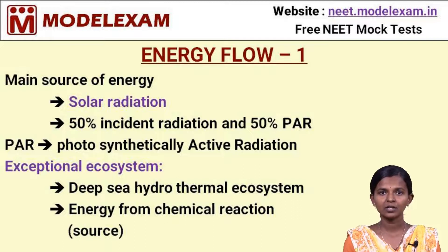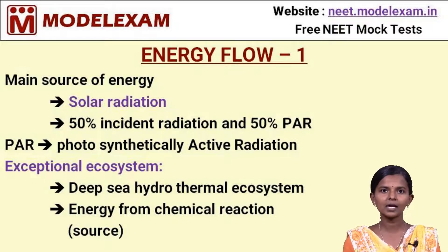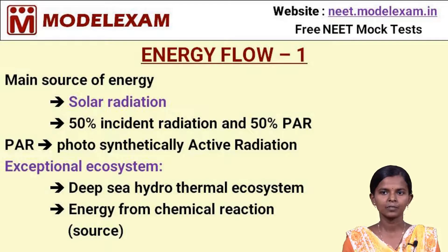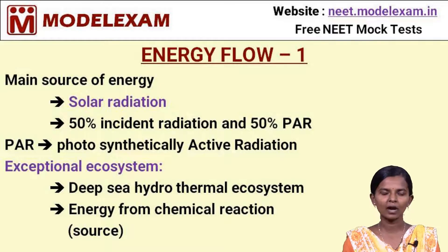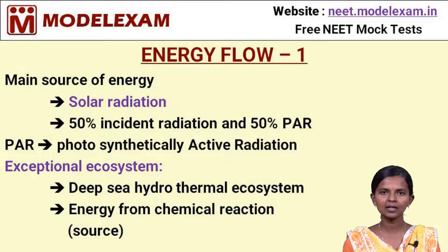The main source of energy in an ecosystem is solar radiation. It consists of 50% incident radiation and 50% PAR, which stands for photosynthetically active radiation. This solar radiation provides energy for plants, which is in turn used by heterotrophs. The only ecosystem that is an exception to this is the deep sea hydrothermal ecosystem, where there is no solar radiation and the energy source is generated by chemical reactions used by organisms living there.